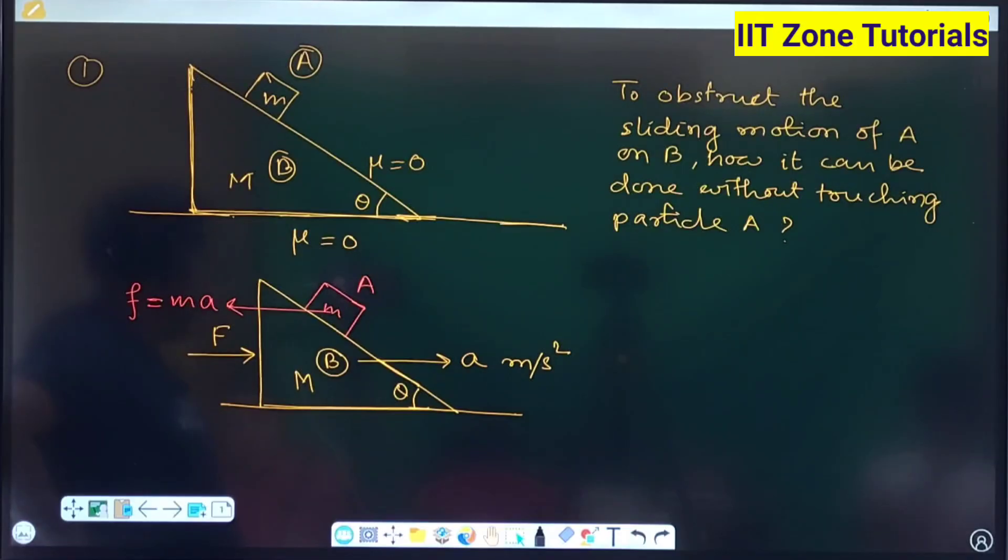B, B will get accelerated. B will be identified as the non-inertial reference frame. The moment it will get accelerated, it will be treated as a non-inertial reference frame. Immediately small m will experience pseudo force in the backward direction. That is the basic theory.